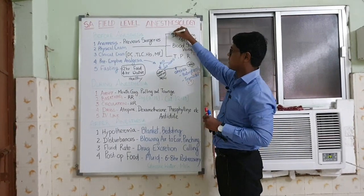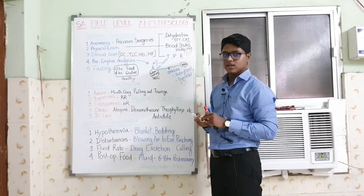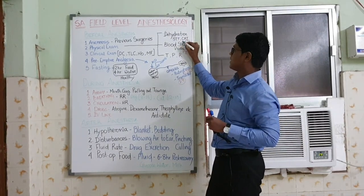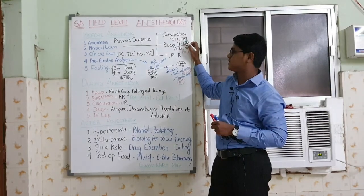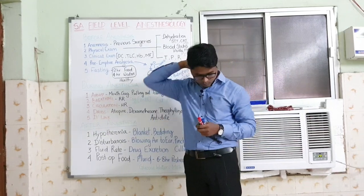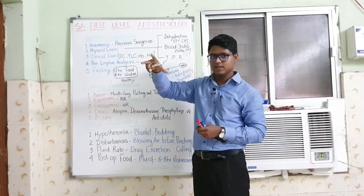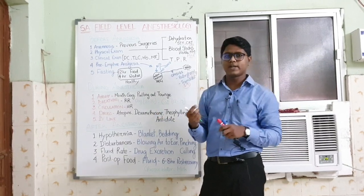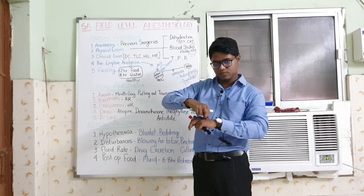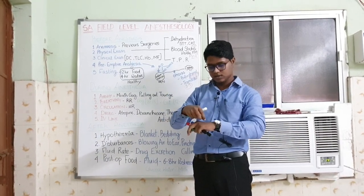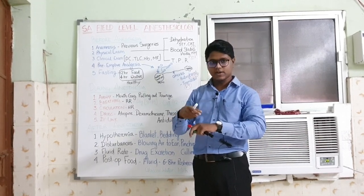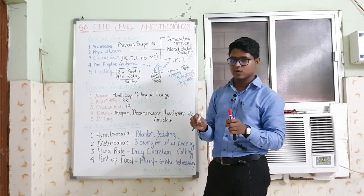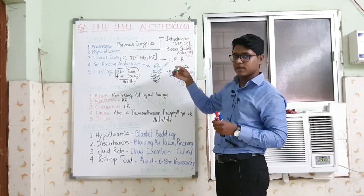Under physical examination, first check the dehydration status. A dehydrated animal will react to anesthesia abruptly. You can test for dehydration using STT — skin tenting test — and CRT — capillary refill time. For STT, hold and pull the skin fold, then release it. In a healthy animal it returns to normal position very fast, less than one second. In an old or dehydrated animal it returns slowly. If you find a dehydrated animal, give fluids first before anesthesia.